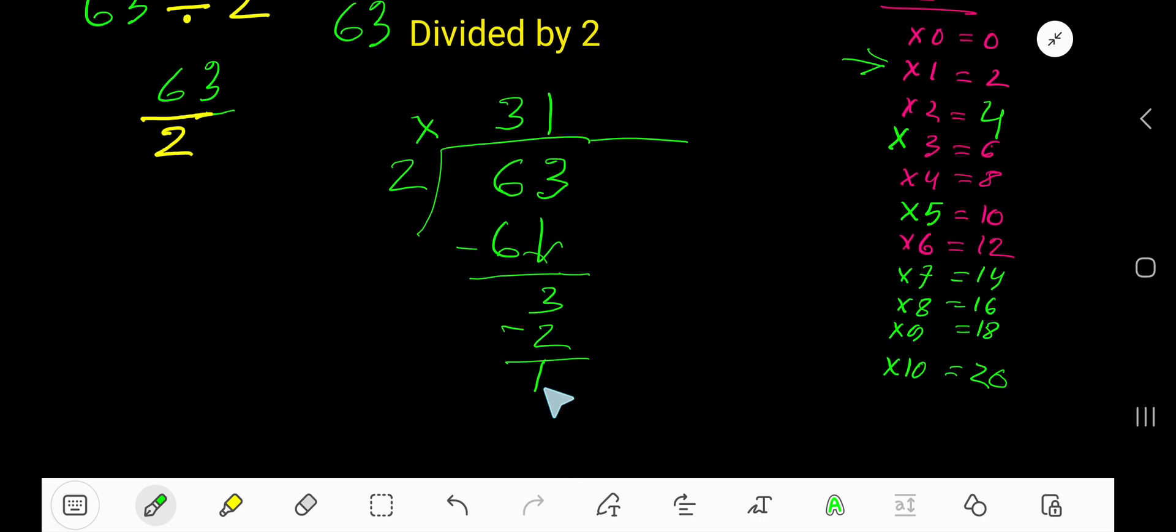Your remainder is 1, and this will be your quotient. But to continue this process, or if you want to write your answer in decimal, then take here a decimal and you are allowed to take any number of zeros. Bring down the first zero. But before this zero there is a decimal.